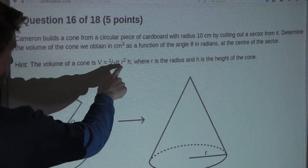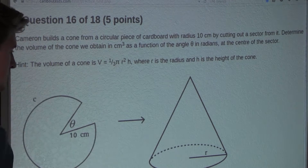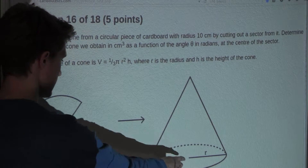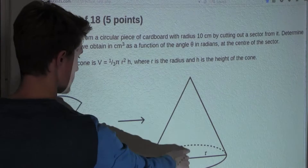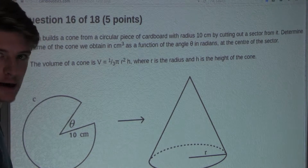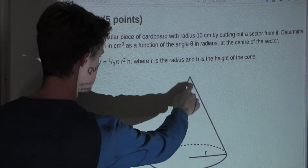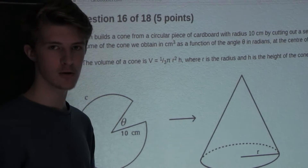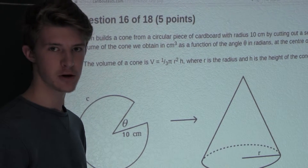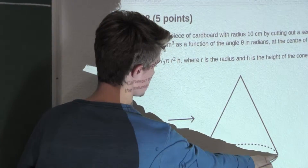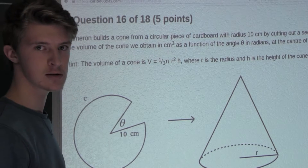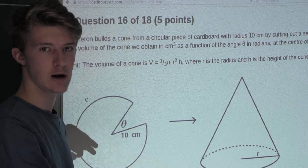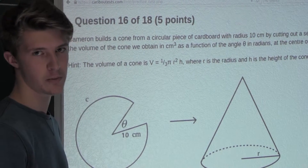We want the volume of the cone, V equals one third pi R squared H, so we need to find R and H. We have R here, but where is H? H is just the height of the cone. Now we can see that these three lines form a right triangle, and for right triangles we can use the Pythagorean theorem. Since we already have the slant side length of 10 centimeters, if we find either the radius or the height, we can find the remaining length.